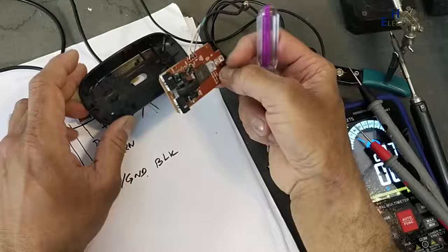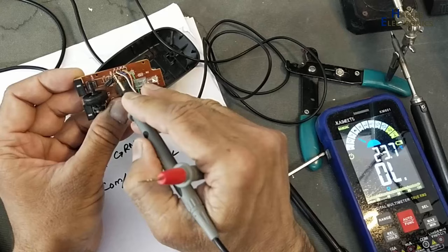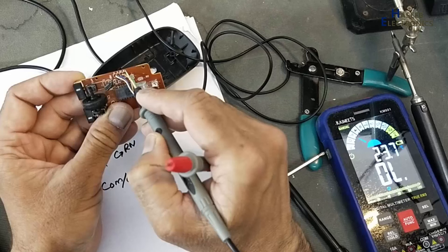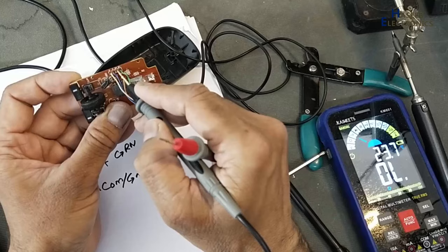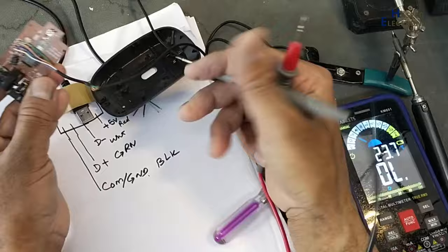Here is marking V that is 5 volt, G ground, D positive, D negative. If we see in this wire, white wire is 5 volt, blue is ground, red wire D positive, green wire D negative, that is totally different than the standard colors.